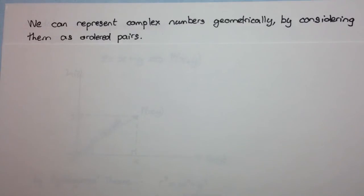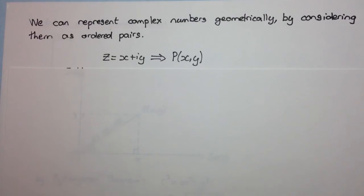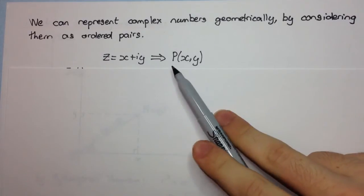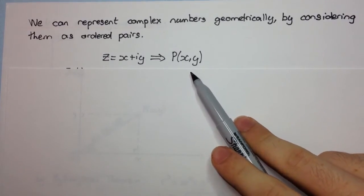Okay, so what do I mean by an ordered pair? Well, if we have a look at the complex number z, which equals x plus iy, we can think of this as a point on a regular Cartesian plane. And we think of it as the point x comma y. So this is an ordered pair.